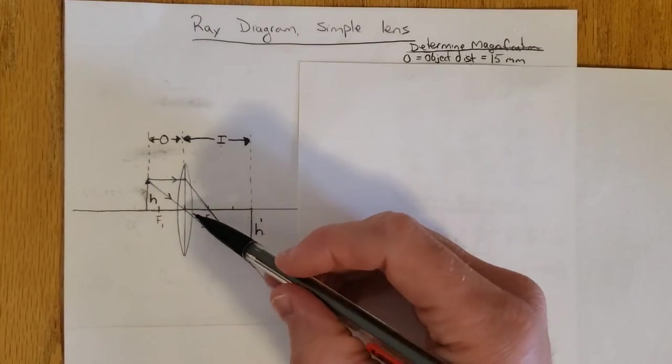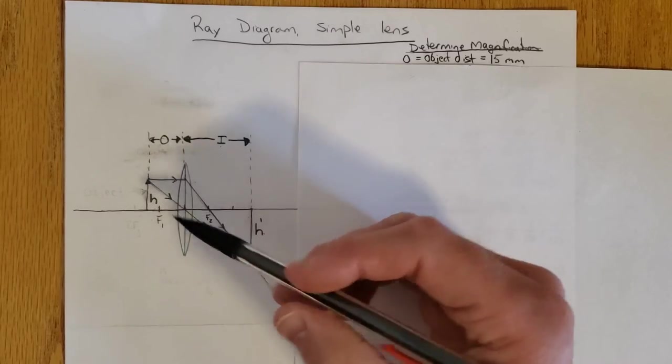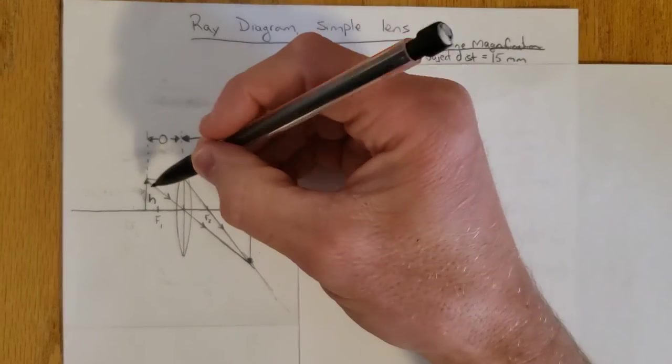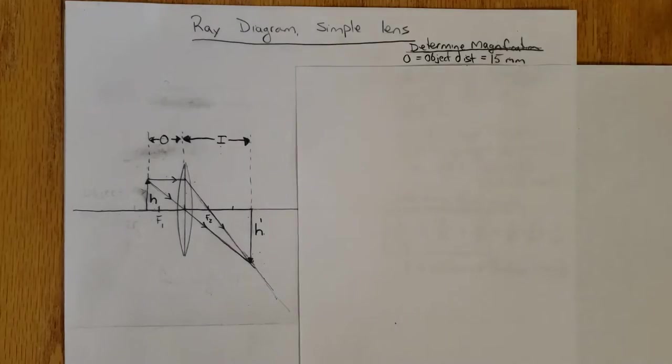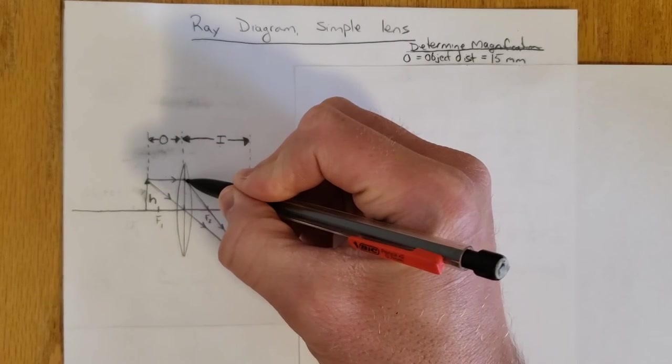Here's our ray diagram. I'm going to draw two rays from the top of my object. The first is going to be parallel to the principal axis and it's going to pass through the center of the lens.